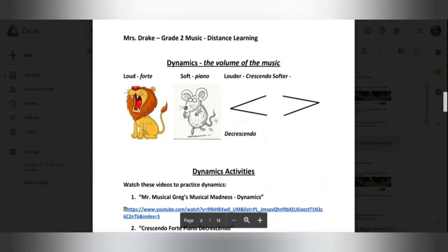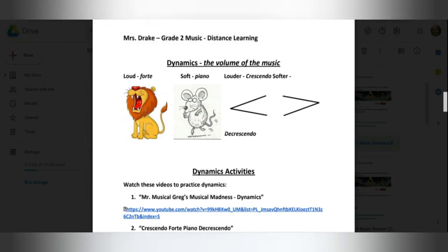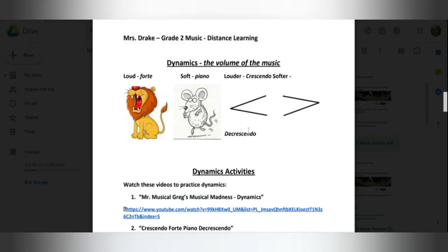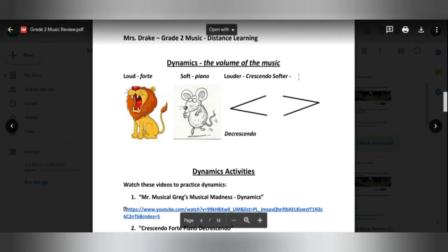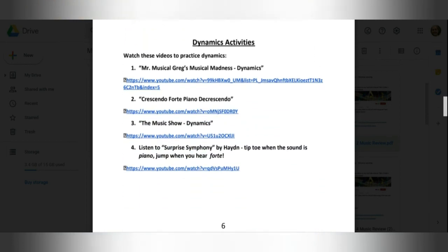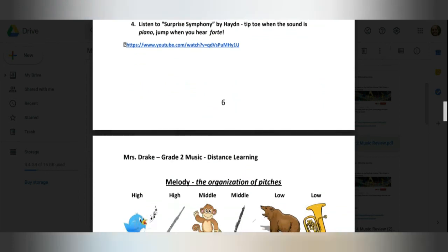We had to look at the volume too, or the dynamics. Was it loud or forte? That's our Italian name, like a lion. Or soft, like a mouse? Piano. And crescendo means to get louder. And decrescendo means to get softer. The tempo changes and the dynamics changes make our music more interesting. That's why we need to talk about them.